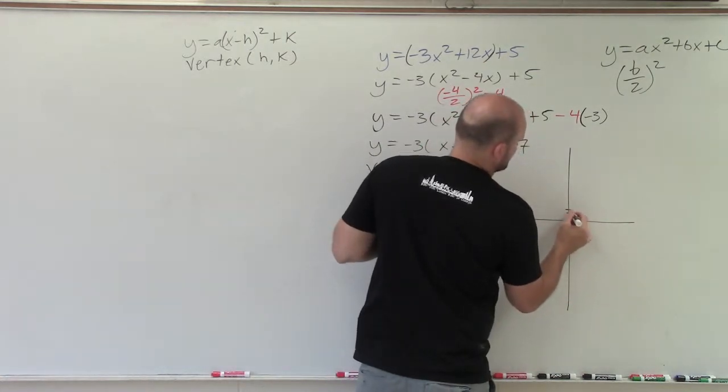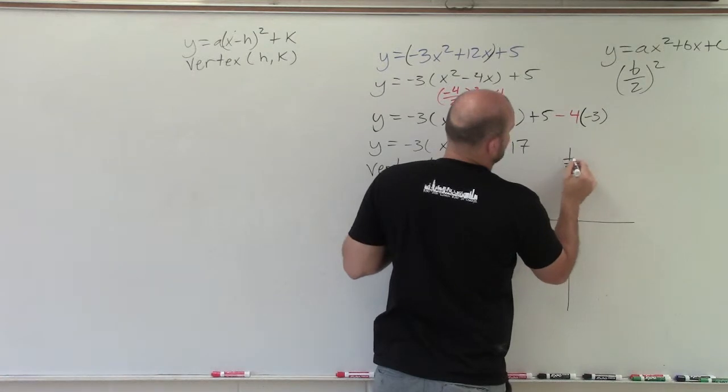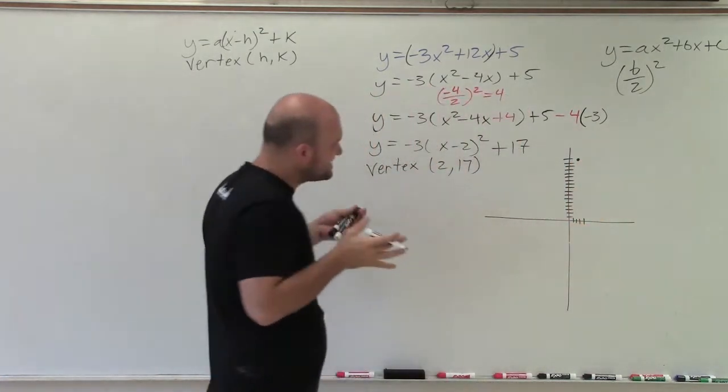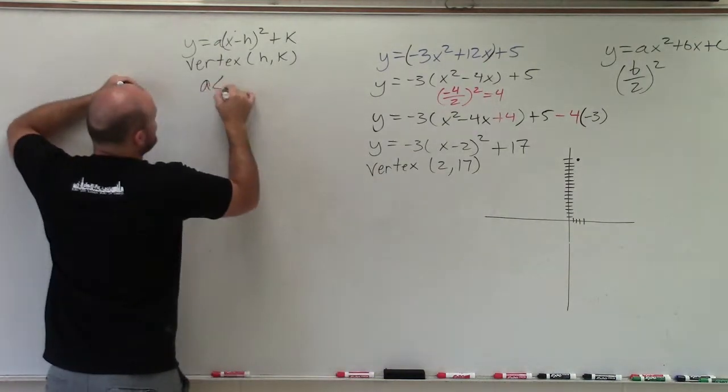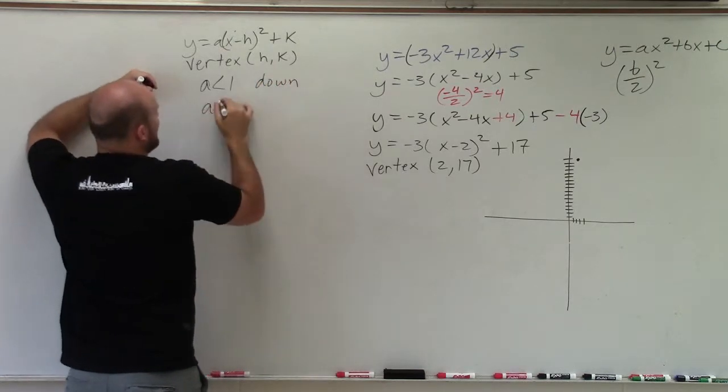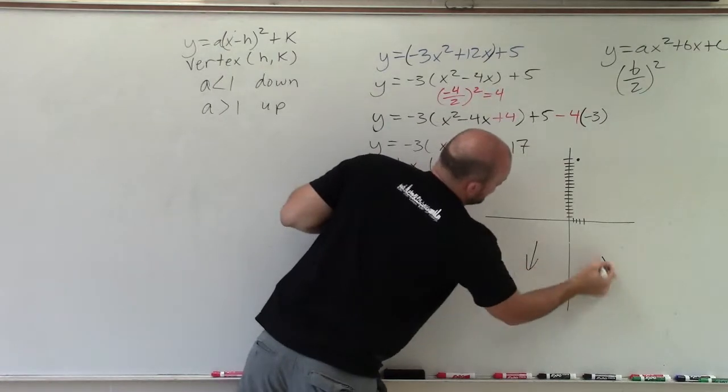So 1, 2, 1, 2, 3, 4, 5, 6, 7, 8, 9, 10, 11, 12, 13, 14, 15, 16, 17. Now this gets a little tricky here, because we know that when a is less than 1, my graph is going to open down. And when a is greater than 1, my graph opens up. So I know the end behavior of this graph is going to open down.